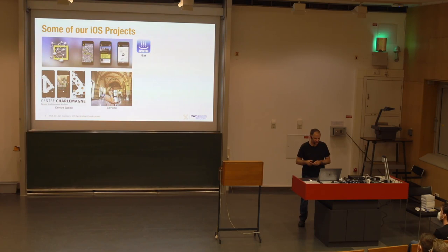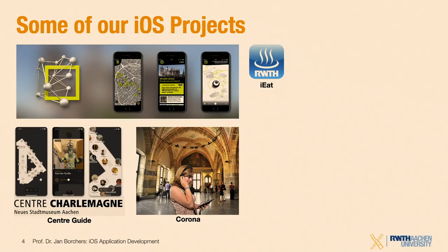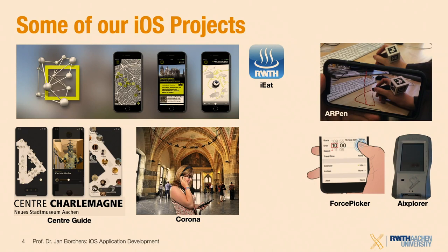These are all tools available on or built for the App Store. On the research side, we built the Force Picker — a test application that uses force touch to select data instead of spinning wheels — which saves screen real estate. AR Pen is an app you can download that lets you draw in augmented reality with your iPhone and a printed QR code marker, tracking your movements to design 3D objects you can send to a 3D printer.